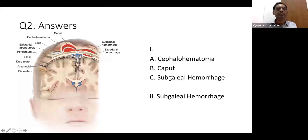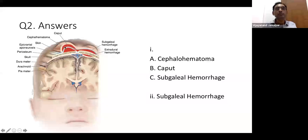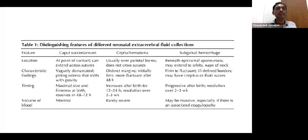A is cephalohematoma — subperiosteal. B is caput. And C is subgaleal. If you look closely, this is the epicranial layer. You can see a white line here — that is the subperiosteal. This one is freely moving, crossing the suture line as well. And subgaleal — these are the differentiating features.